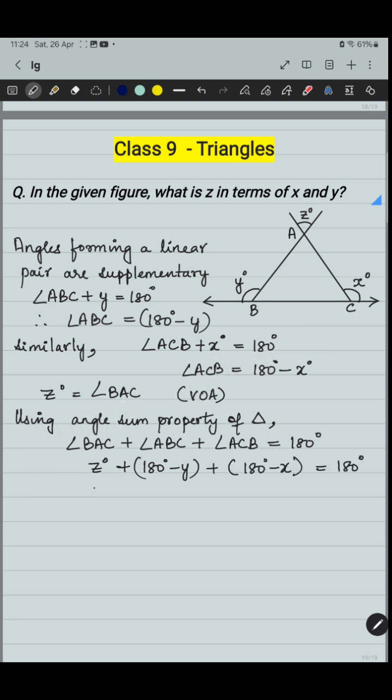Just solve for it. We can write 360 degree plus Z minus Y minus X equals 180 degree. Simplify it from RHS to LHS, so you have 180 plus Z equals Y plus X, or Z equals Y plus X minus 180 degree.